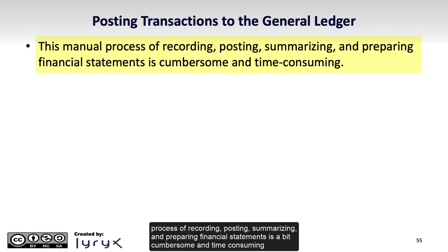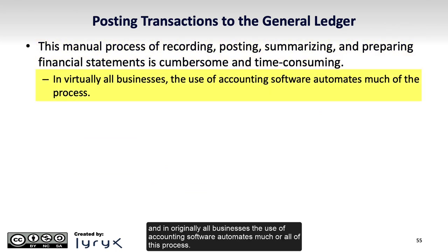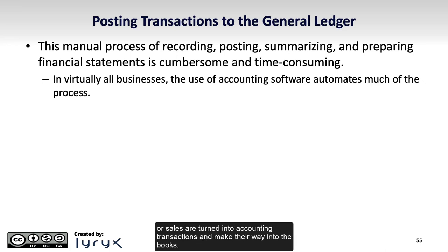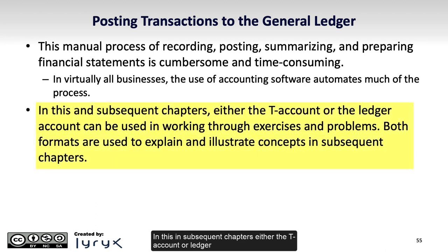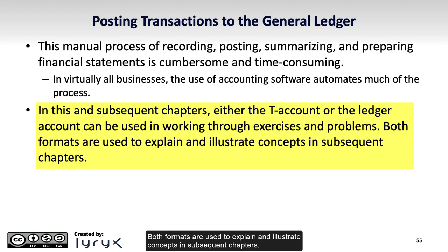As you can appreciate, this manual process of recording, posting, summarizing, and preparing financial statements is a bit cumbersome and time-consuming, and in virtually all businesses, the use of accounting software automates much or all of this process. Still, it's important for you to have a basic understanding of how economic events like purchases or sales are turned into accounting transactions and make their way into the books. In this and subsequent chapters, either the T-account or ledger account can be used in working through exercises and problems, and both formats are used to explain and illustrate concepts.